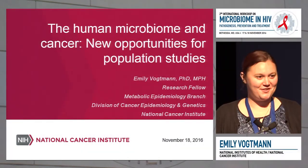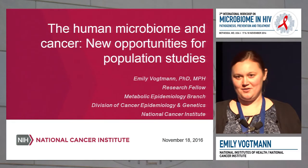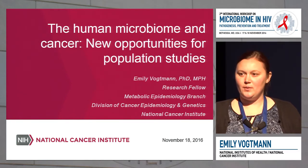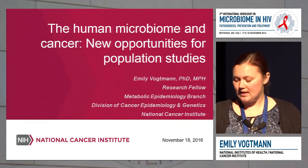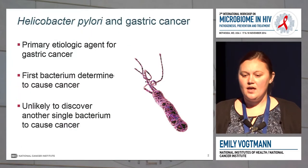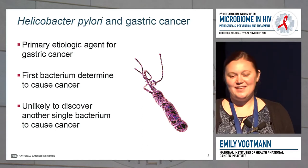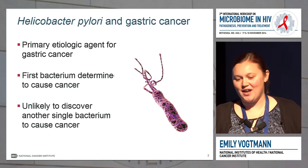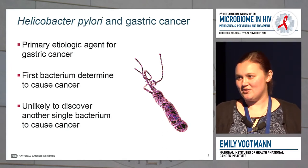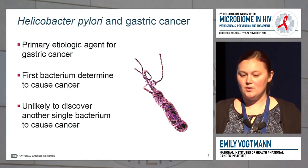I mainly focus on cancer, but what I wanted to talk about more today was the epidemiology background I have and some of our methods work that we've been doing to evaluate different collection methods and different samples that should be included in larger population studies. Helicobacter pylori is the primary etiologic agent for gastric cancer. It's the first bacteria that was determined to cause cancer, and this has served as the basis for our group to study the microbiome.